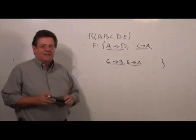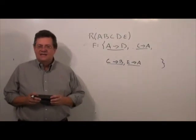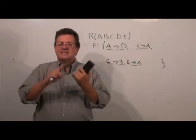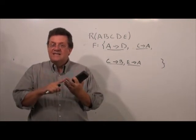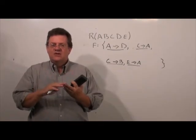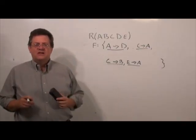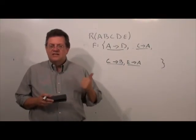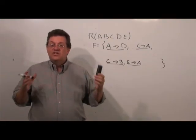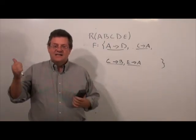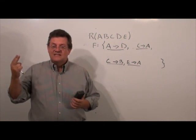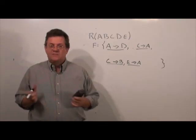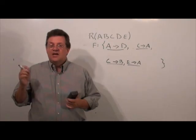So our minimal cover is: A → D, C → A, C → B, and E → A. To recap: a minimal cover has singleton right-hand side attributes, no extraneous attributes on the left-hand side, and no redundant functional dependencies. Note that a given set of functional dependencies could have two or more different minimal covers. Also, it's very important to apply the steps in the correct order — swapping steps two and three will give a different, incorrect answer.